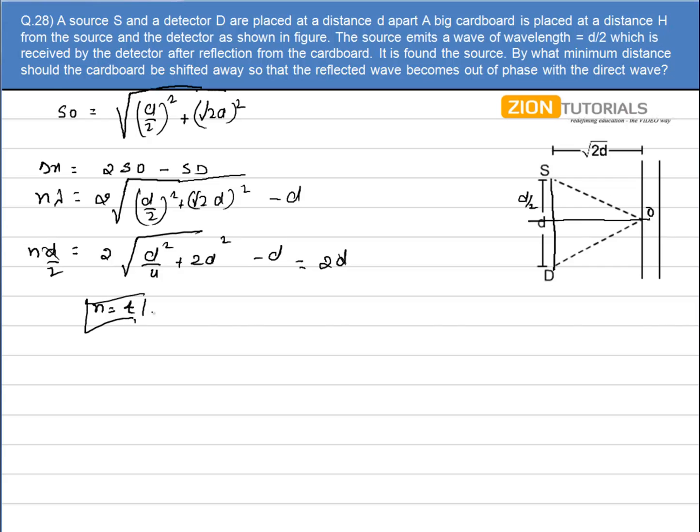Here the question says by what minimum distance should the cardboard be shifted away so that the reflected wave becomes out of phase with the direct wave. Now if it is moved by distance x, let's say this distance is x, and this is the new point O'. The reflected wave and the direct wave will be out of phase, but the value of n will be 4.